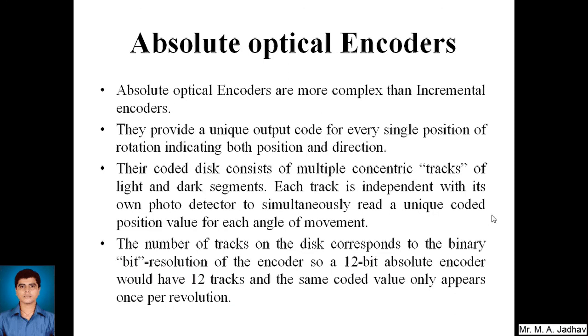The next type is absolute optical encoder. Absolute optical encoders are more complex than incremental encoders. They provide a unique output code for every single position of rotation, indicating both position and direction. Their coded disc consists of multiple concentric tracks of light and dark segments. Each track is independent with its own photo detector to simultaneously read a unique coded position value for each angle of movement. The number of tracks on the disc corresponds to the binary bit resolution of the encoder.